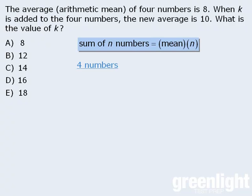First, the question gives us information about the four original numbers. There are four numbers, so n equals 4 and their mean is 8. When we apply our formula, we see that the sum of those four numbers is 8 times 4, which is 32.